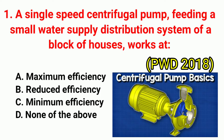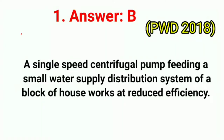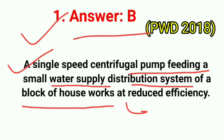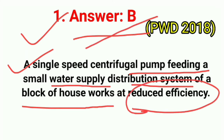Question No. 1. A single speed centrifugal pump feeding a small water supply distribution system of a block of houses works at? This question was asked in PWD 2018 exam. The correct answer is option B: reduced efficiency. A single speed centrifugal pump feeding a small water supply distribution system works at reduced efficiency.